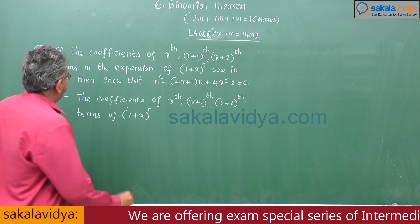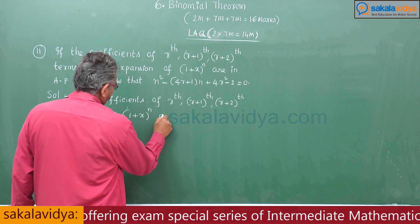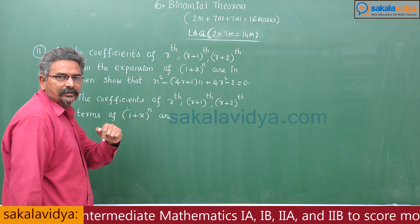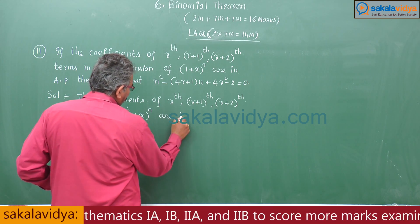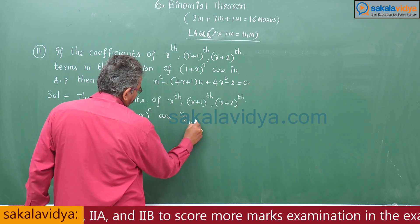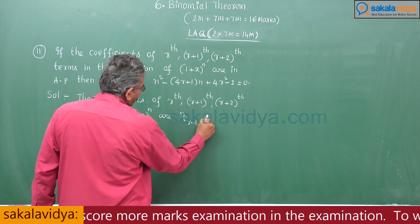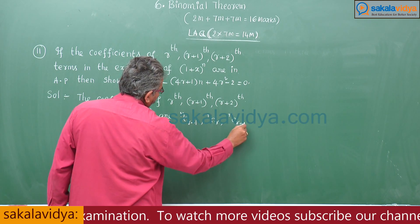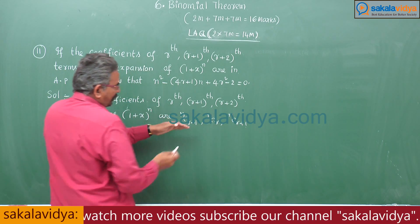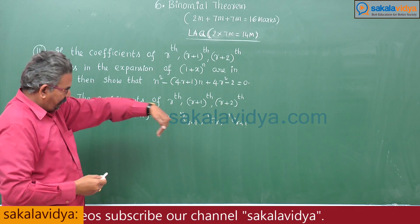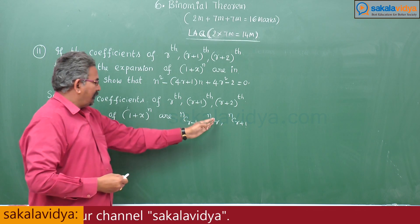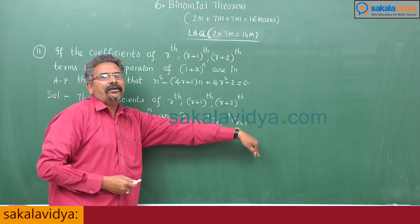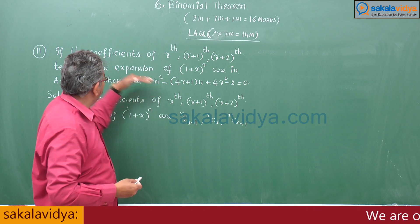In the expansion of (1+x)^n, the rth term coefficient is nCr-1, the (r+1)th term gives nCr, and the next is nCr+1. So these three — nCr-1, nCr, nCr+1 — are in arithmetic progression.